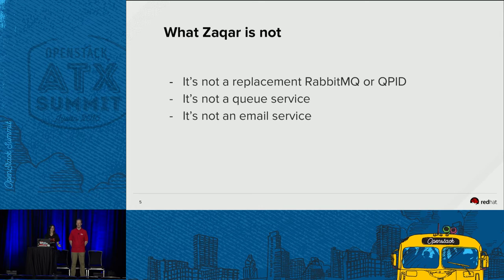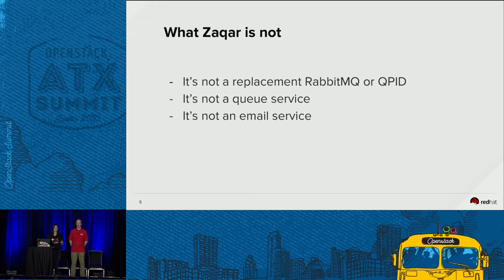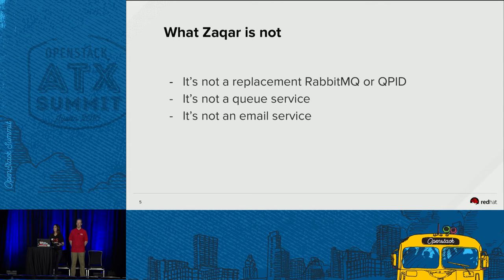What Zakhar is not: Zakhar is not a replacement for RabbitMQ or Qpid. We've gotten this question many times. There may be some cases where the use cases overlap, but that is not the main goal. If you're familiar with the OpenStack architecture, you'd know we use RabbitMQ or Qpid for communication between components, and it is highly inadvisable to use Zakhar for this. Zakhar has been built with web development in mind and provides a set of tools not suited for RPC communication.